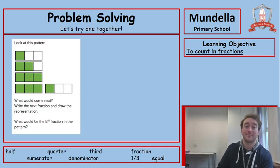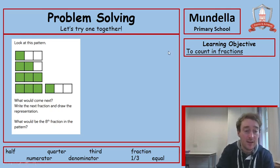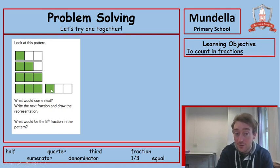Let's try one together. Remember, it says here, look at this pattern. What would come next? Write the next fraction and draw the representation. Hmm. Okay. So, it looks like we've got one out of three here, two out of three here, or one third, two thirds, three thirds, four thirds.